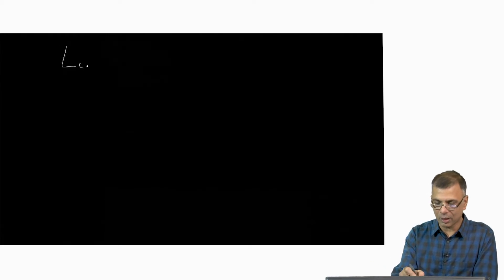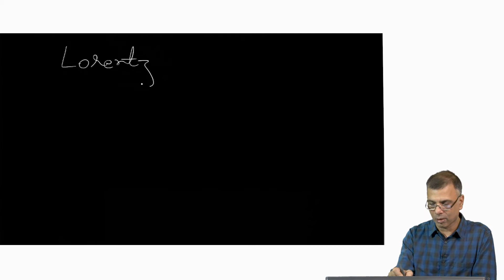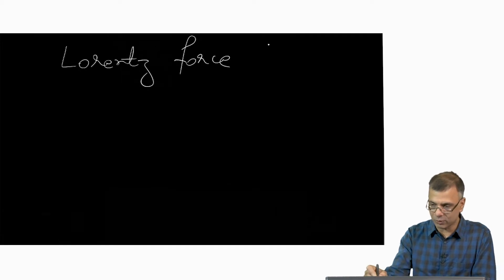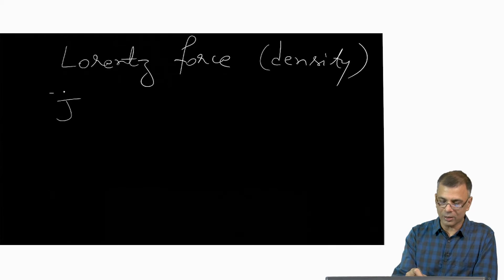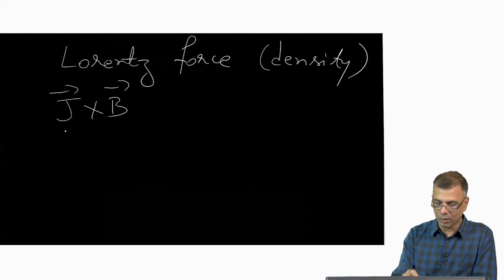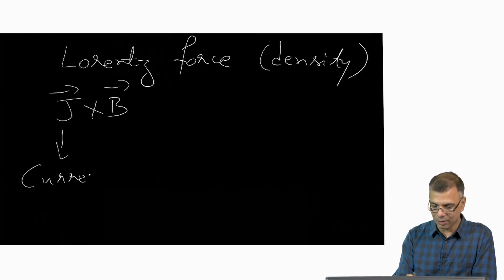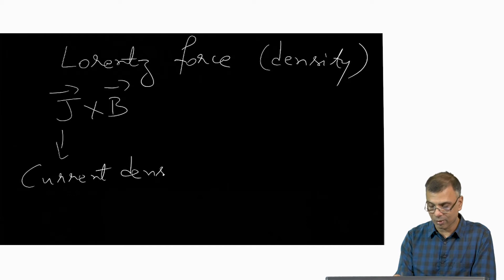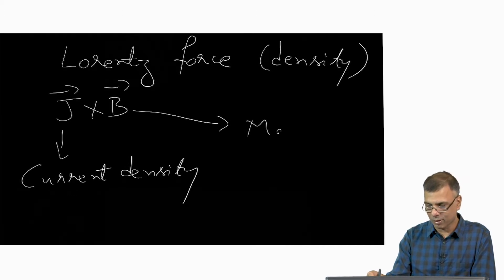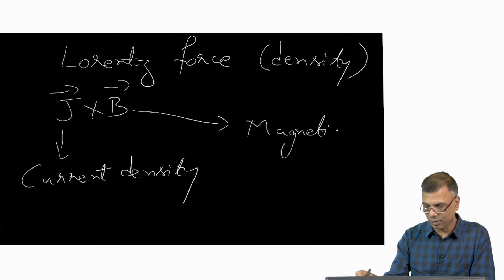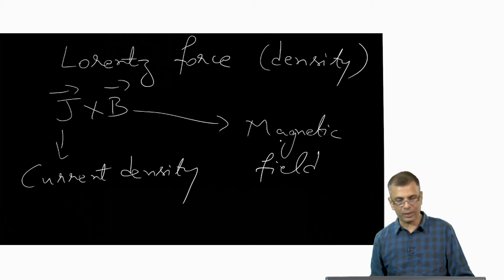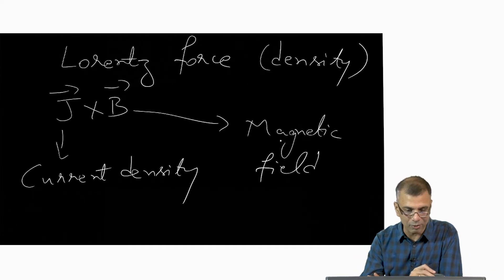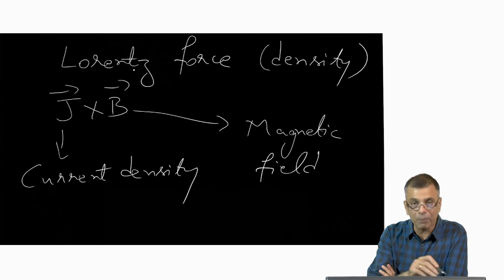What did the Lorentz forces look like? The Lorentz force density — which is force per unit volume — looked like J cross B, where J is current density and B is the magnetic field. There is a factor of 1 over 4π out front, but the main part is J cross B.